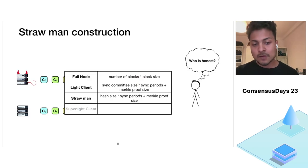The communication complexity of this construction is the hash size times the number of sync periods, plus the Merkle proof size.